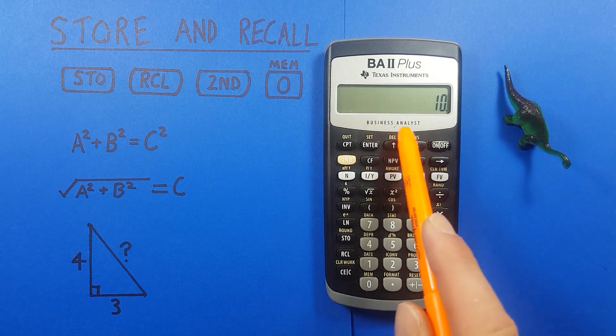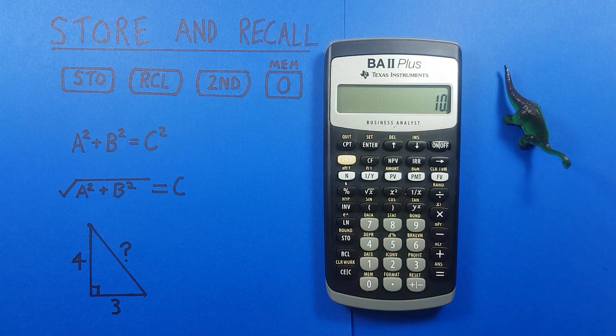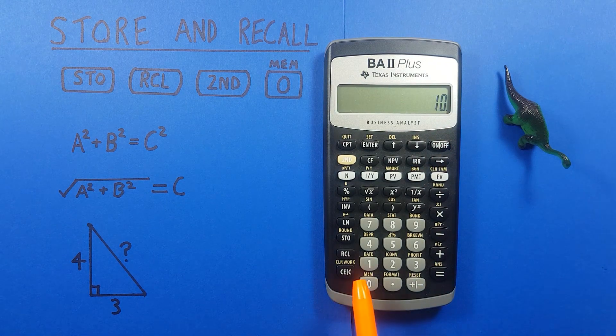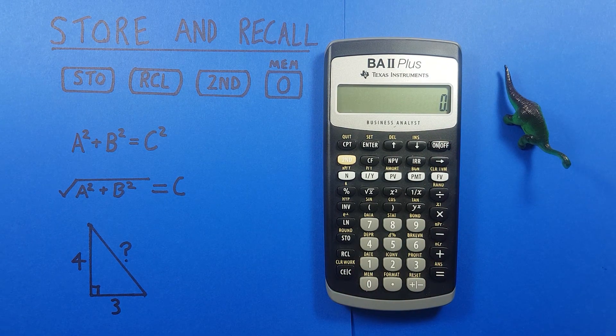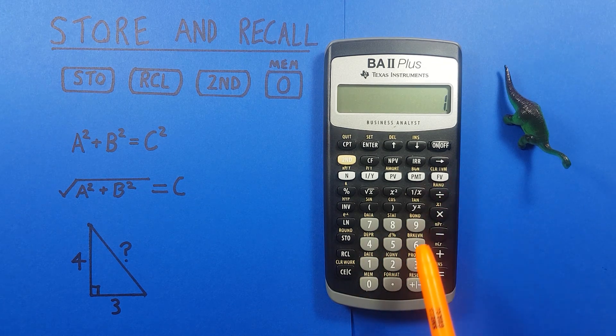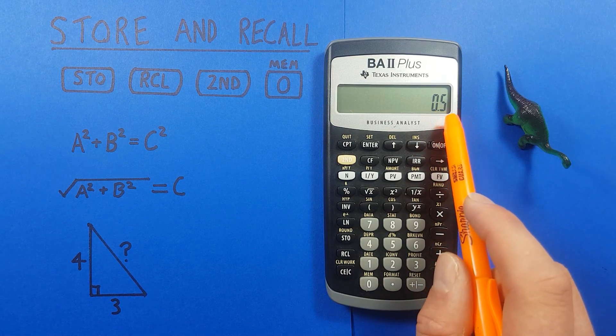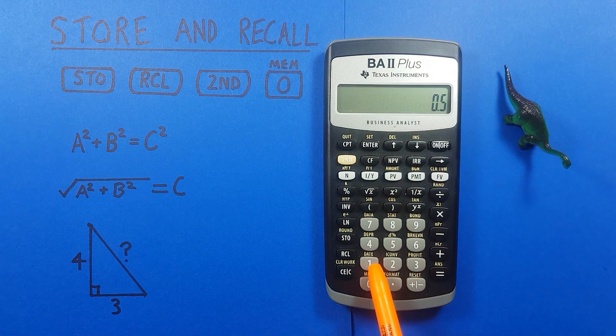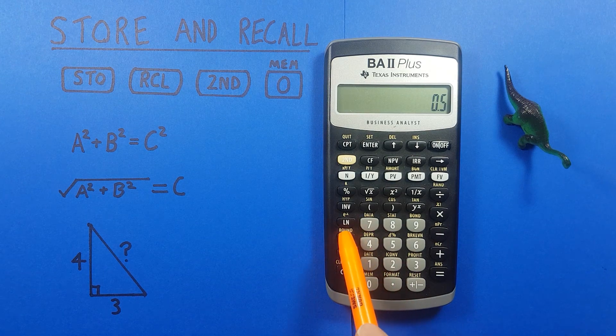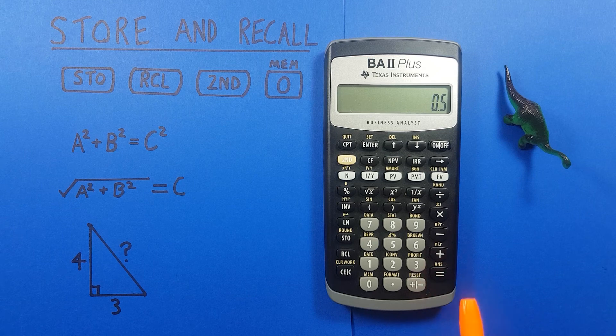You won't see any indication on the screen other than a little decimal that appears after the number letting you know it's been stored. You can also store the result of calculations, so if for example we go 1 divided by 2 equals, we get 0.5, and we can store that into memory slot number 1 by pressing STO 1.